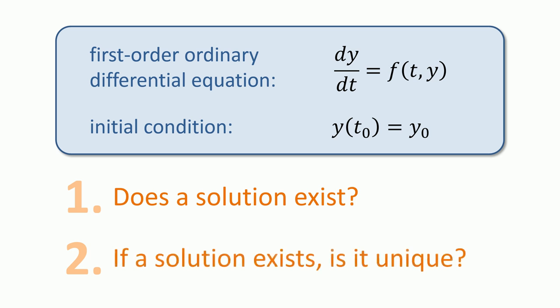Second, if a solution exists, is it unique? This question is important because if this differential equation models a physical system, we need to know that we have a unique solution before using the solution to make a prediction about the system. Otherwise, if there are multiple solutions, how would we know that we have chosen the right one to make the prediction?